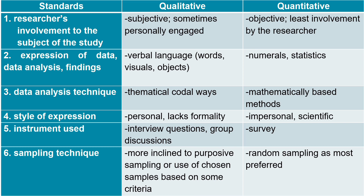For expression of data: data in qualitative research is expressed through texts, words, sentences, and paragraphs, while in quantitative study researchers use numbers, symbols, or graphic organizers. For data analysis technique: in qualitative study, researchers use thematic analysis where they interpret gathered data through coding, while in quantitative study they use mathematical formula and statistical methods to interpret the gathered data.